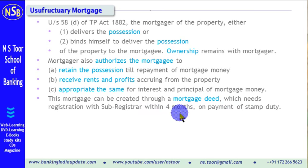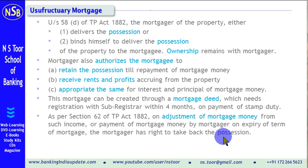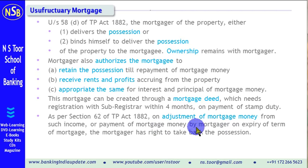While this registration is being done, payment of stamp duty is also required to be made according to state law. According to Section 62 of the Transfer of Property Act, on adjustment of this loan from such income, or on payment of Mortgage money by the Mortgager on expiry of the term of Mortgage, the Mortgager has the right to take back the possession. The Mortgager can take back the possession in two situations: 1. When Mortgage money is recovered from income — rent or profit — or 2. The Mortgage term has expired and the Mortgager makes the payment to adjust the Mortgage money. In that case, the possession can be taken back.